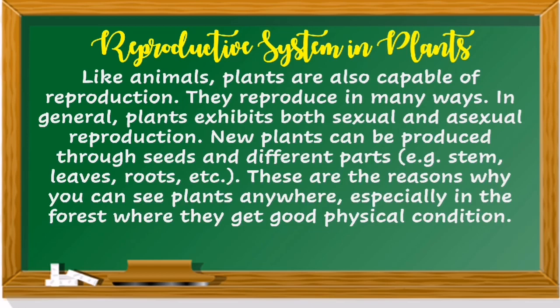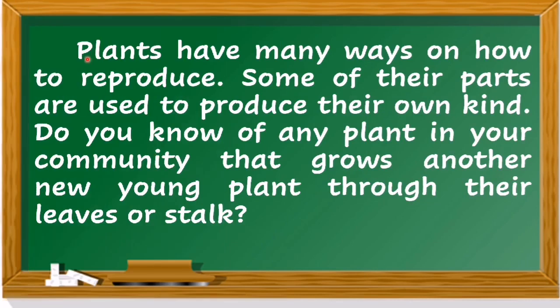Reproductive system in plants — like animals, plants are also capable of reproduction. They reproduce in many ways. In general, plants exhibit both sexual and asexual reproduction. New plants can be produced through seeds and different parts, for example stem, leaves, roots, and others. Plants have many ways on how to reproduce; some of their parts are used to produce their own kind.